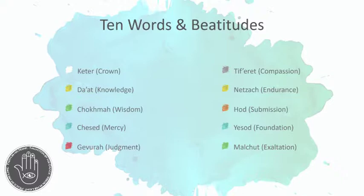Jesus taught Kabbalah. This is one of the reasons people see Eastern philosophies in his version of Judaism. In traditional Kabbalah, messages are taught in parables, in code — and that's exactly how Jesus taught. The Alpha, or Aleph, the first Hebrew letter, represents the 10 words. The Omega, or Tav, the last letter of the Hebrew alphabet, represents the Beatitudes — that's what Christ taught. We're going to read one going up and the other going down and put them together with the Sephirot to gain greater knowledge, wisdom, and understanding.